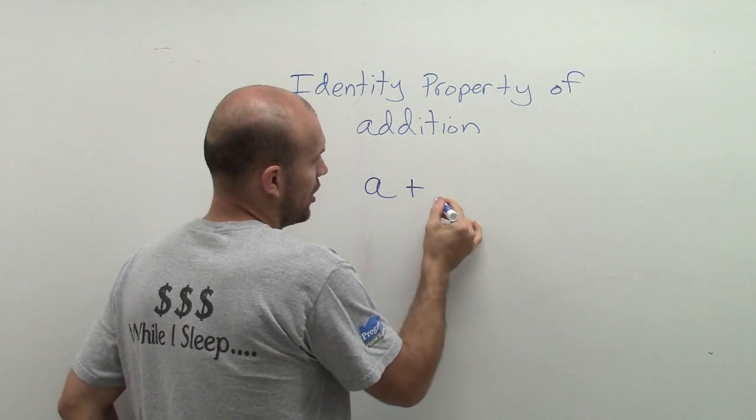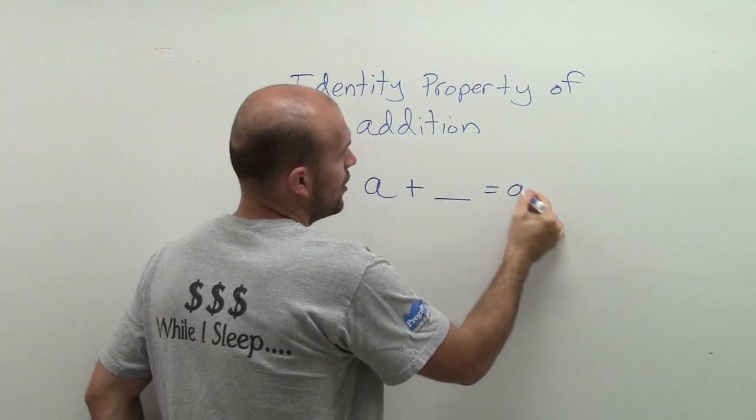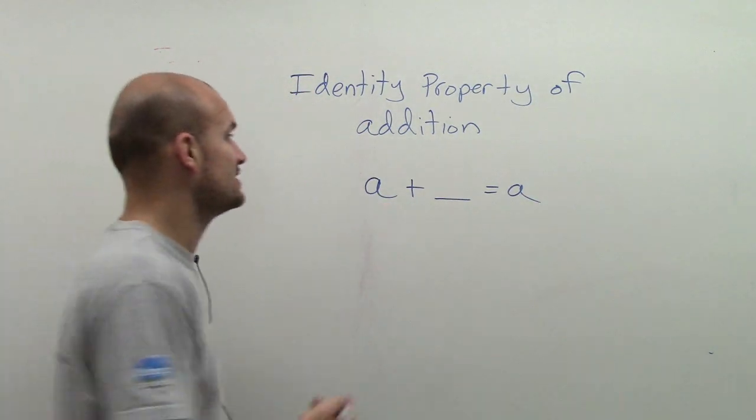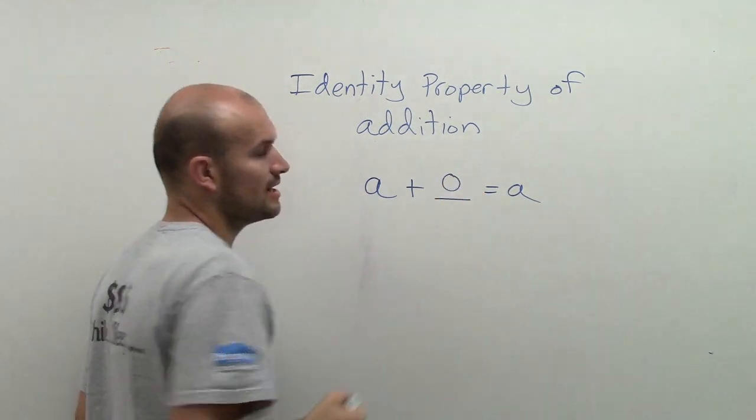And so we've got to think about all the numbers that we know. What number can we add to A that's going to give us back A? Well, the only number that is possible is the number 0.